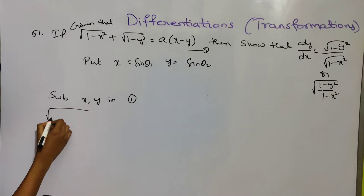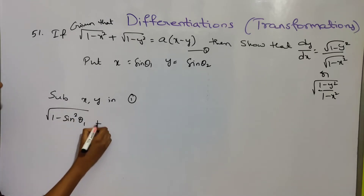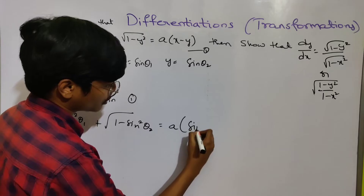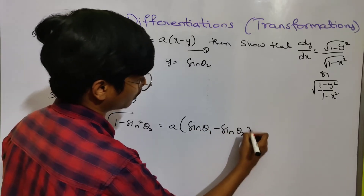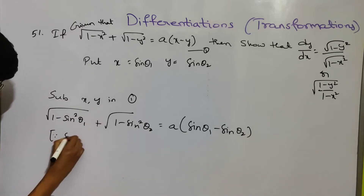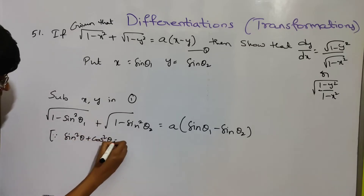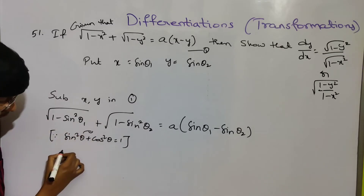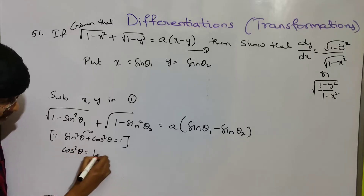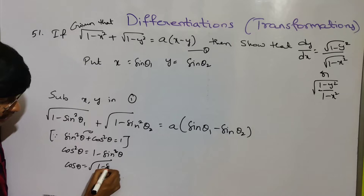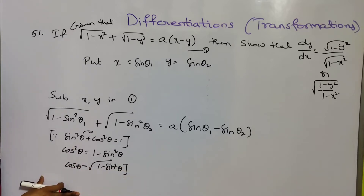√(1 - sin²θ₁) + √(1 - sin²θ₂) = a(sin θ₁ - sin θ₂). We use the identity sin²θ + cos²θ = 1, so 1 - sin²θ = cos²θ. Therefore cos²θ₁ = 1 - sin²θ₁ and cos θ = √(1 - sin²θ).